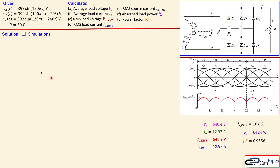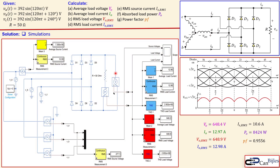Now let's collect all the values we just determined and look at the simulation results. This is the circuit built in Simulink using Simscape elements. You can see the three AC voltage sources, the six-diode rectifier, the pure resistive load, voltage sensors to measure the source voltages, a current sensor for one AC source, and displays for the scope along with mean and RMS measurement blocks.